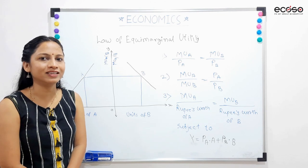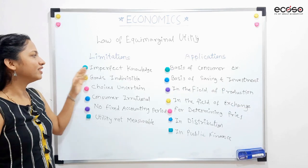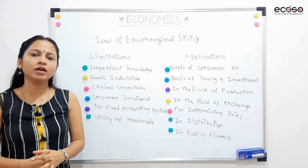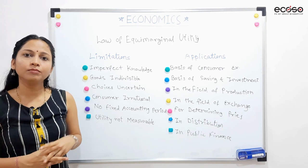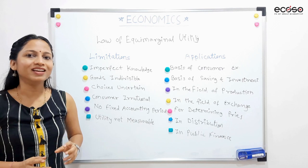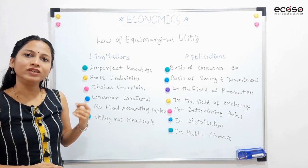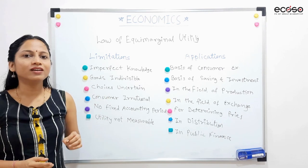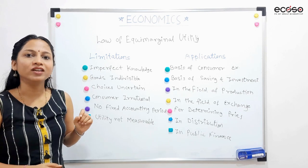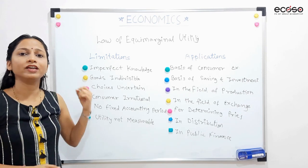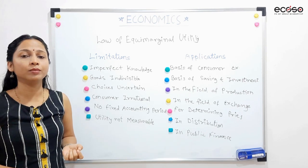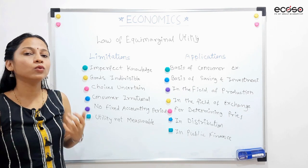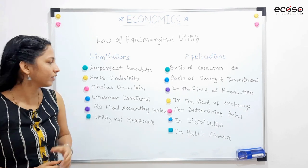Now, we will see limitations of this theory. The first one is imperfect knowledge. As a consumer, kya hame market ka har ek commodity ka perfect knowledge ho sakti hai? Nahi hota hai. Toh isi wajah se law inoperative ban jaata hai, kyunki consumer ko market ka exact knowledge nahi rehta — kaun si commodities market mein available hain, unki prices kya hain — iske baare mein hume koi bhi knowledge nahi rehti.